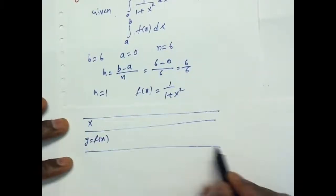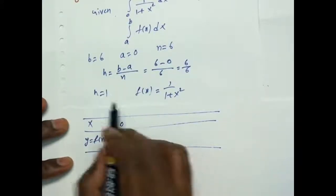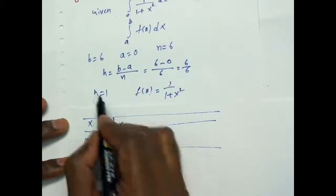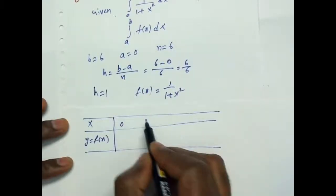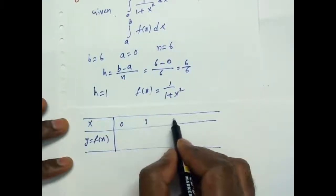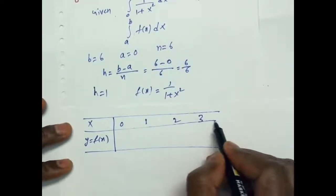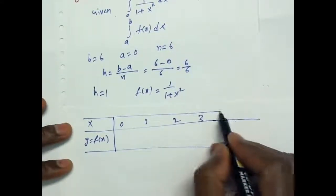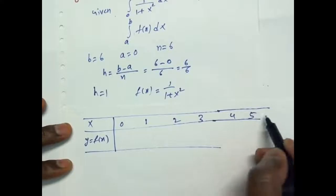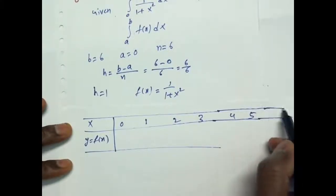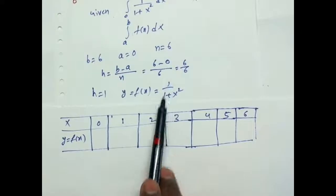Now, what is the starting x value? That is the lower limit, which is 0. We add h equal to 1 each time: 0, 1, 2, 3, 4, 5, 6. These are our x values from x0 to x6.